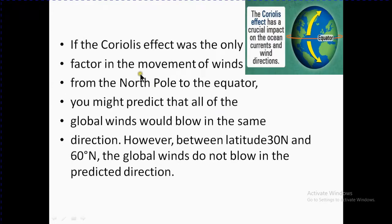If the Coriolis effect was the only factor in the movement of winds from the north pole to the equator, you might predict that all global winds would blow in the same direction. However, between latitude 30°N and 60°N, the global winds don't blow in the predicted direction. The Coriolis effect has an impact on ocean currents and wind direction, changing the direction of the wind.